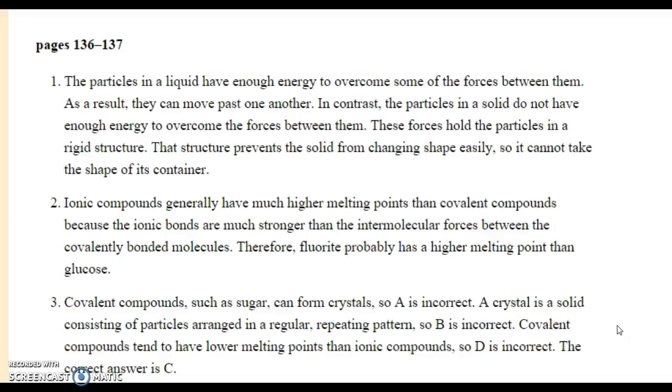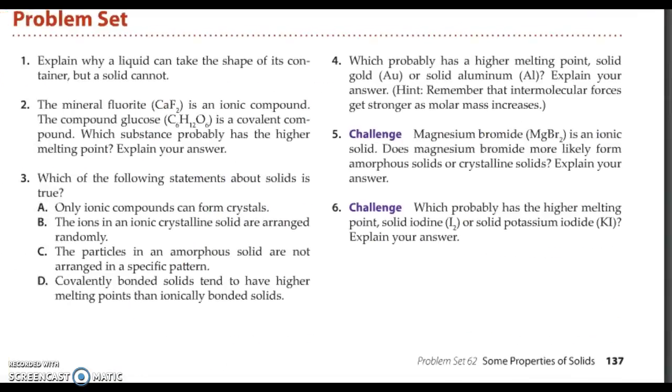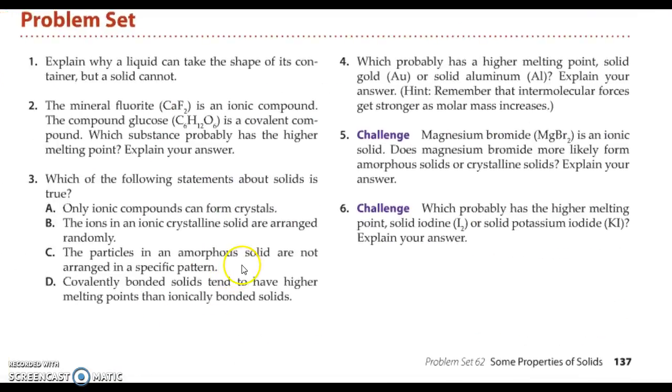Covalent compounds tend to have lower melting points than ionic compounds. So D is incorrect. The correct answer is C. Which, just to review, the particles in an amorphous solid are not arranged in a specific pattern. I like to think of amorphous solids like Laffy Taffy.